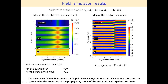For theta equal to 7.5 degrees, regions of high field enhancement of around 20 can be observed in the central dielectric layer. The enhancement of the field in the transmitted wave of 0.1 can also be observed. Therefore, the maximum field enhancement at theta equal to 7.5 degrees is around 100 times compared to the field at the normal incidence case.